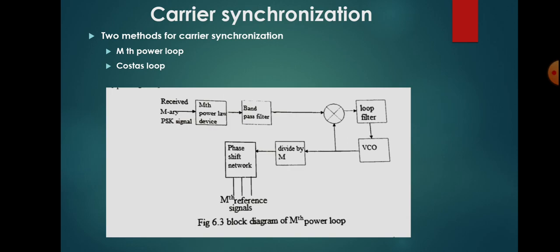There are two methods for carrier synchronization: the Mth power loop and the Costa's loop.